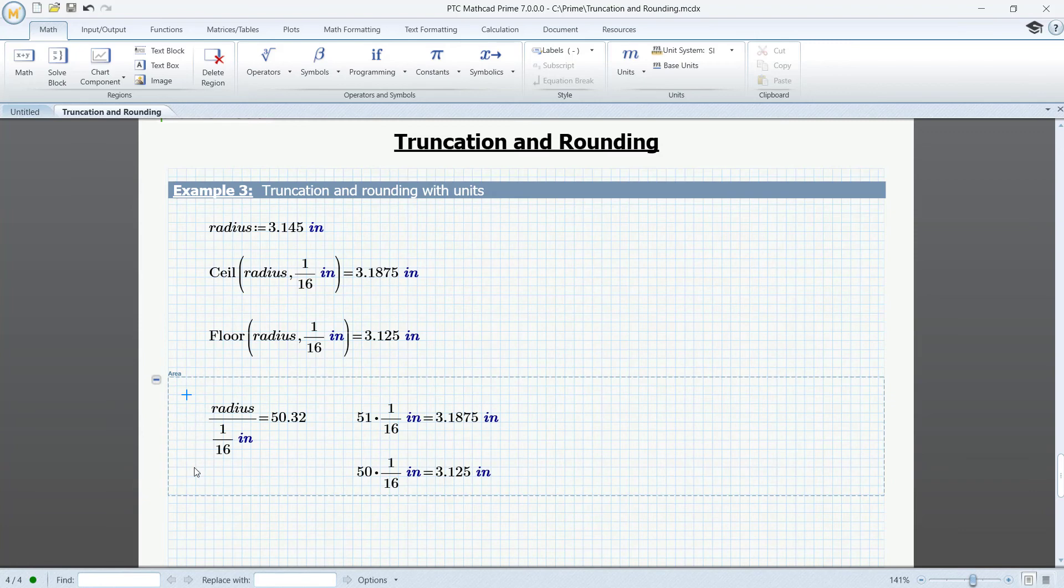Take the radius, divide it by a sixteenth of an inch. So here is the calculation if we ceil the result. And here is the calculation if we floor the result.